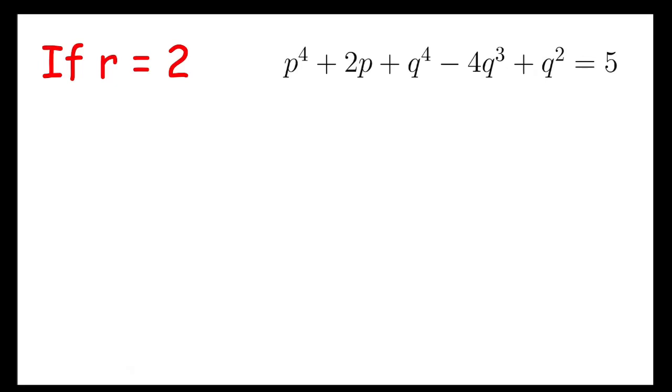Now, for the second case, if r equals 2, then we'll have this equation: p^4 + 2p + q^4 - 4q^3 + q^2 = 5. I can rearrange it, taking out the product part.